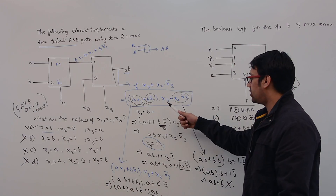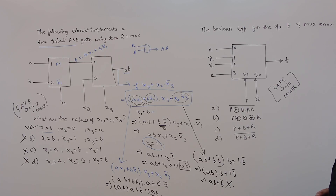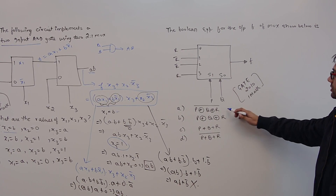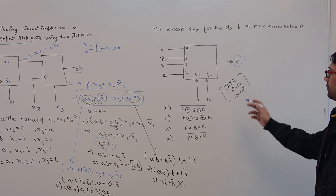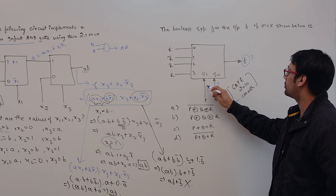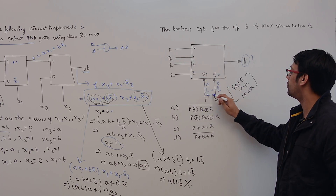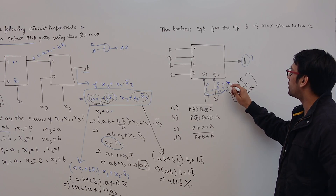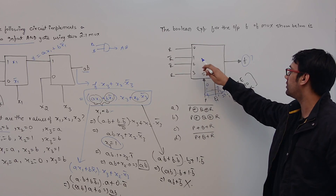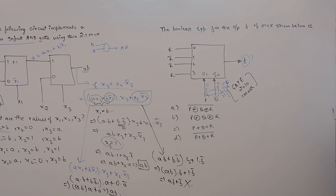Now for the second question: find the Boolean expression for the output F of the multiplexer shown. We have inputs P and Q as select lines S0 and S1. The combinations are: 00 selects input 0 (R), 01 selects input 1, 10 selects input 2, and 11 selects input 3. So for each select combination, the corresponding input is selected.